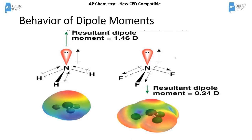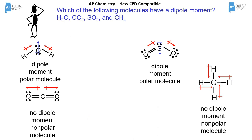In NF₃, there's a positive charge at the top near nitrogen. The dipole moment is smaller than in NH₃ because nitrogen and fluorine have more similar electronegativity values. When deciding on dipole moments, you must look at whether the electron pulls cancel each other out or whether electrons gather at one end, creating a negative pole and leaving a positive pole at the other end.